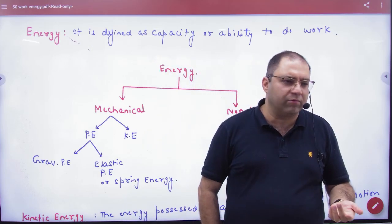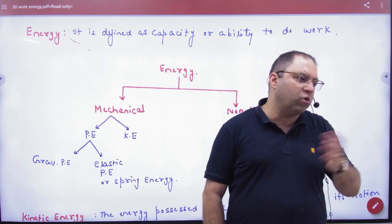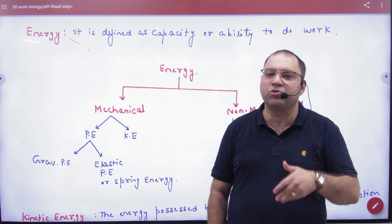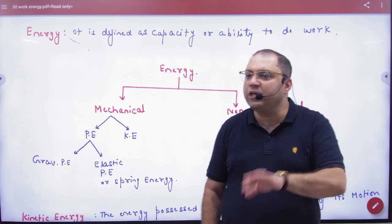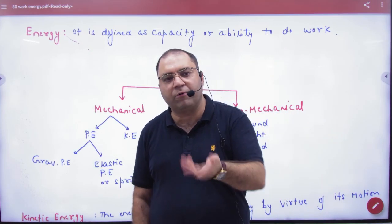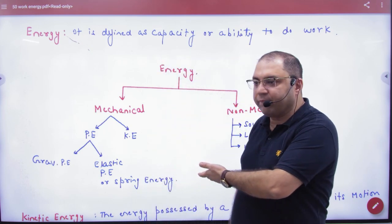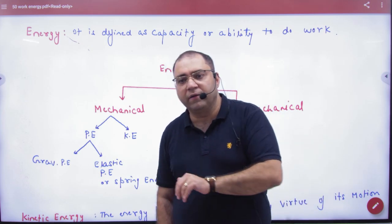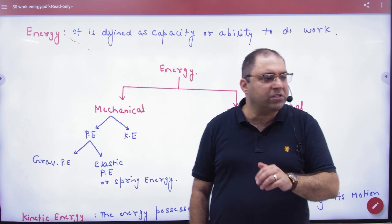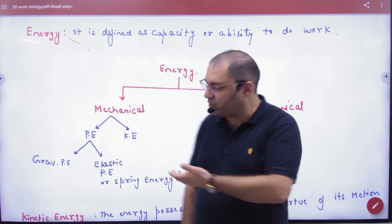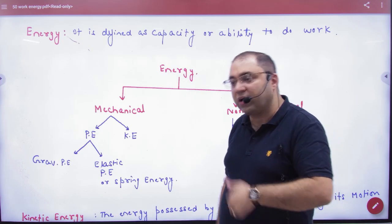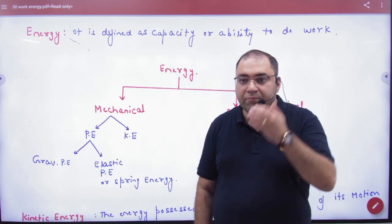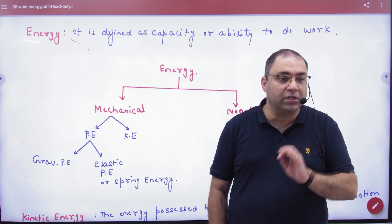You might say there are only two types of potential energy in this world. But then one day a chapter on charges will come, and I will say there is potential energy in charges too. Then a chapter on magnetics in plus two will come, and again I will say potential energy. So you may be confused — every few chapters, a new potential energy appears. So first, let me tell you how much potential energy there really is. I am going to give you one statement that covers all potential energy.